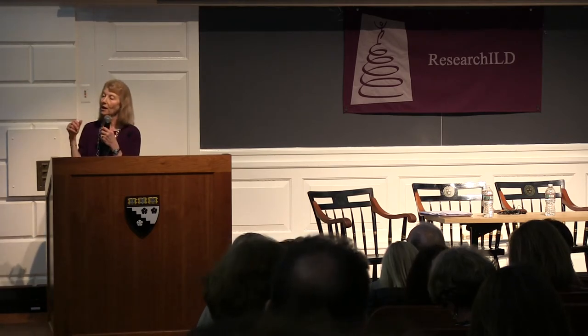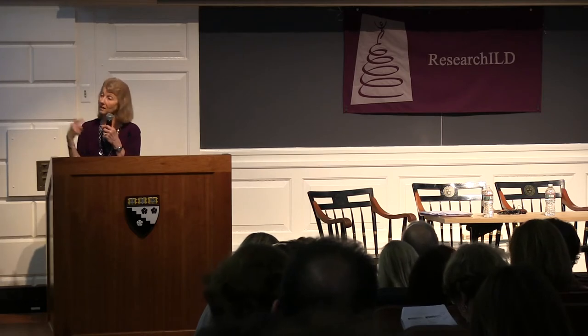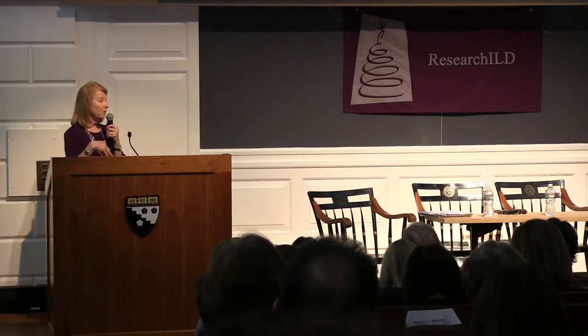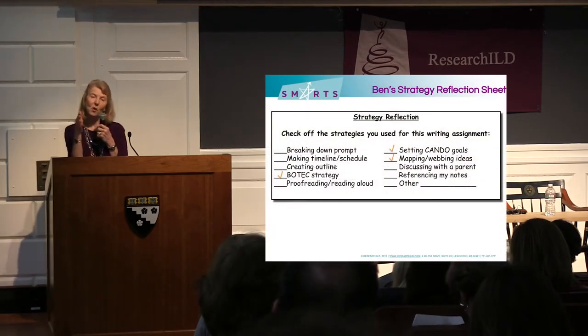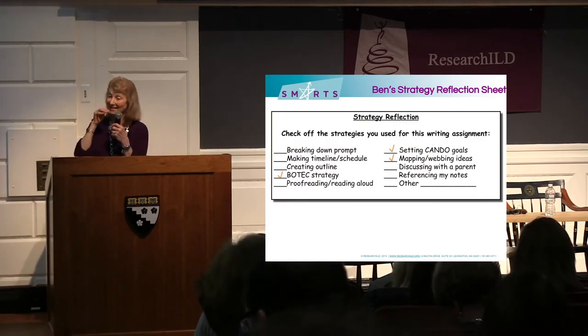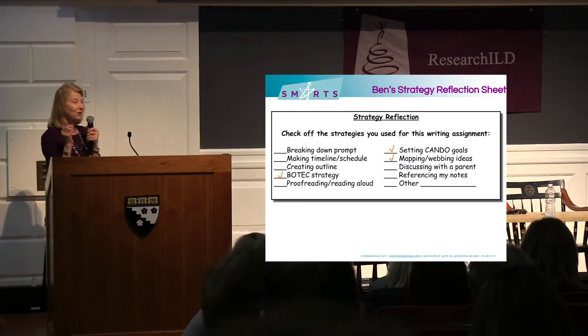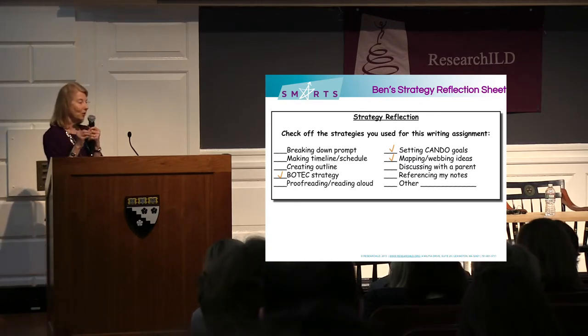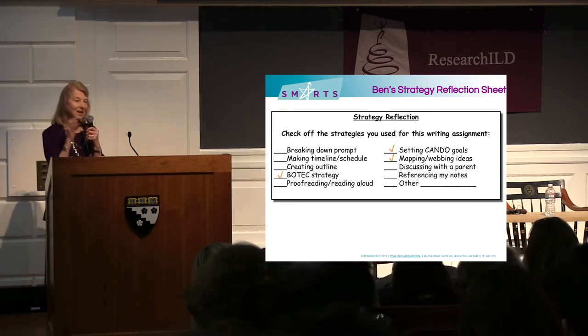The third piece of metacognition we talk about in all our work is strategy reflection sheets. If there's one thing you can take back on Monday morning, this is it — it's easy and doable in classrooms. Get kids to start thinking about how they learn. Use it when you assign homework, tests, studying. They need to get credit for it — give them extra credit for reflecting on how they think. You can use multiple choice format, but really it's the open-ended strategies that matter.